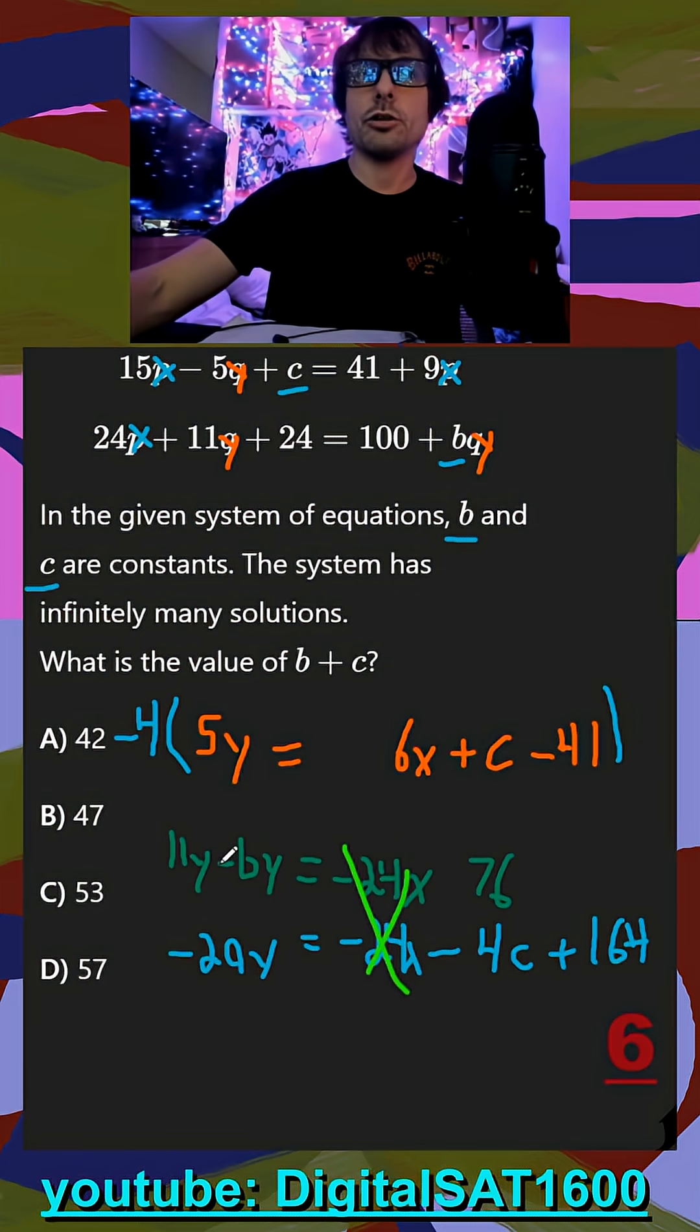My coefficients here - I'm factoring the y out, so it's a coefficient of 11 minus b in front of y. So 11 minus b should equal negative 20. Add b to the other side, add 20 to the other side, and you get b equals 31.